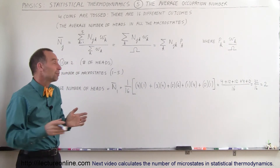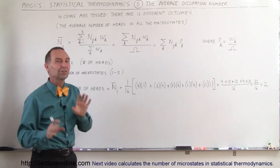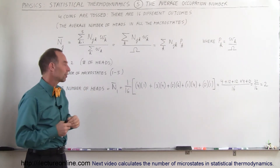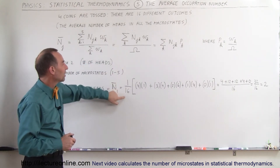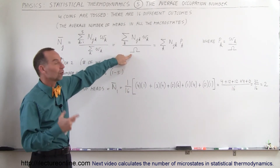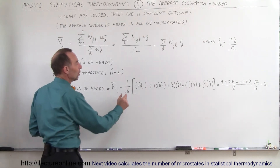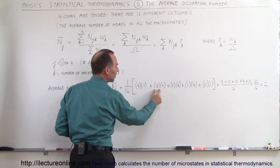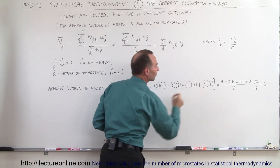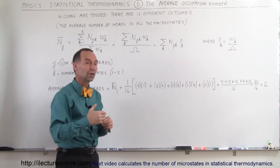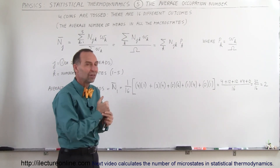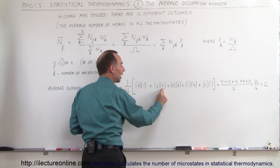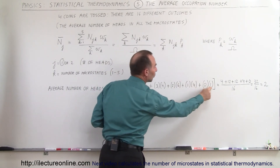It makes a lot more sense when we put some numbers in. We're going to calculate the average number of heads across the macrostates. We take 1 over 16 — because 16 is the total number of microstates — and multiply by the number of coins with heads in each macrostate: 4 in the first, 3 in the second, 2 in the third, 1 in the fourth, and 0 in the fifth. The second number is the thermodynamic probability — the number of outcomes for each macrostate: 1 outcome has 4 heads, 4 outcomes have 3 heads, 6 have 2 heads, 4 have 1 head, and 1 has 0 heads.